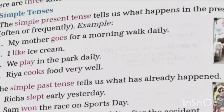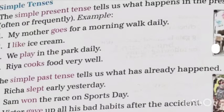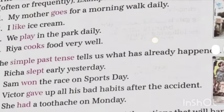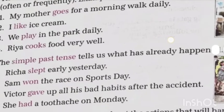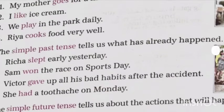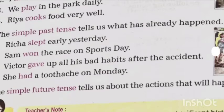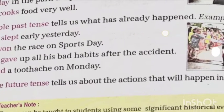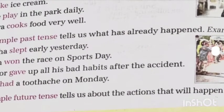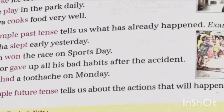Simple past tense covers actions which have already happened. For example: 'Richa slept early yesterday,' 'Sam won the race on sports day,' 'Victor gave up all his bad habits after the accident,' and 'she had a toothache on Monday.' These sentences reflect that the action has already happened.